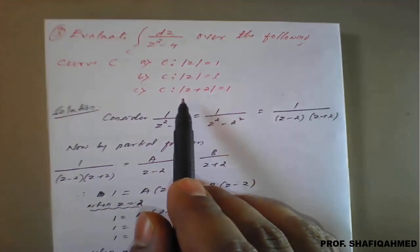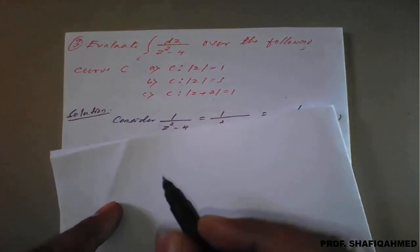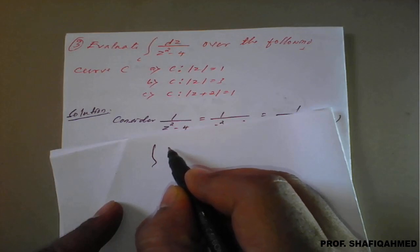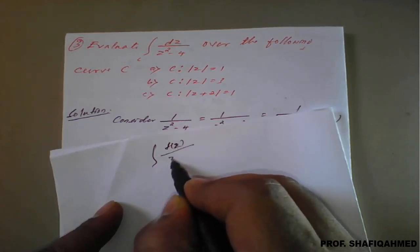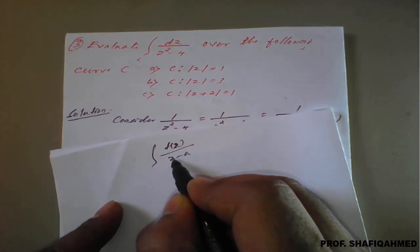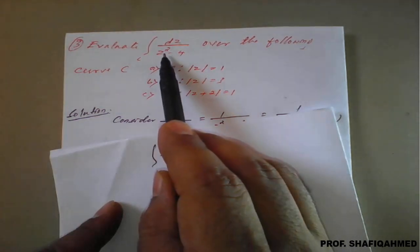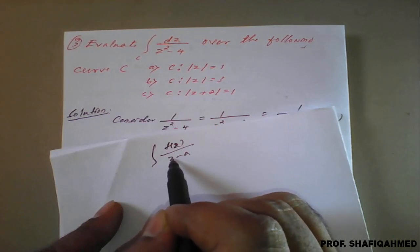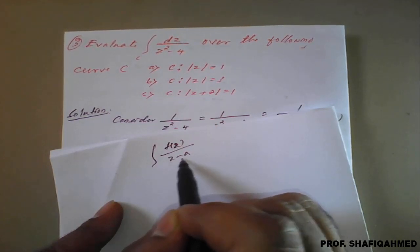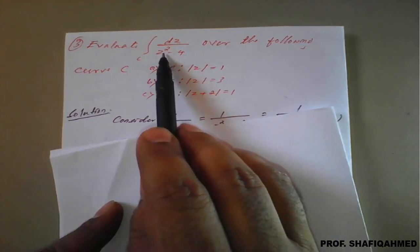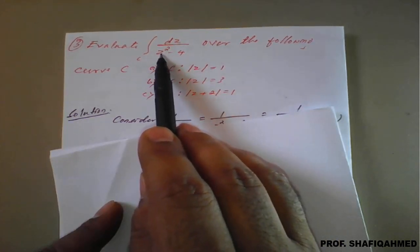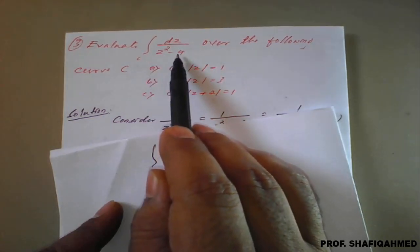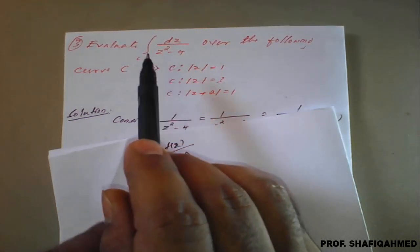Remember, Cauchy's integral formula is given by the integral of f(z) upon z minus a. Here the power of z is 1 in the formula, but what we have is z². In our previous example, if it is directly z we can find the pole directly. But here it is not clear because it is z², so we need to simplify 1 upon z² minus 4 first by using partial fractions, then we can evaluate.